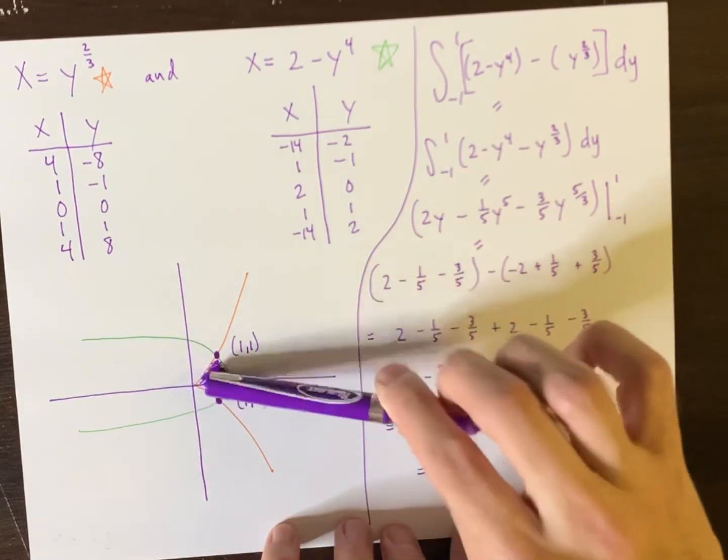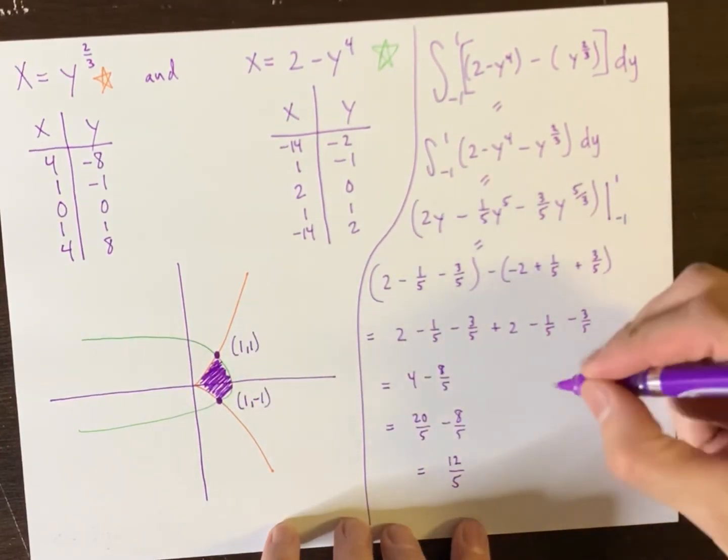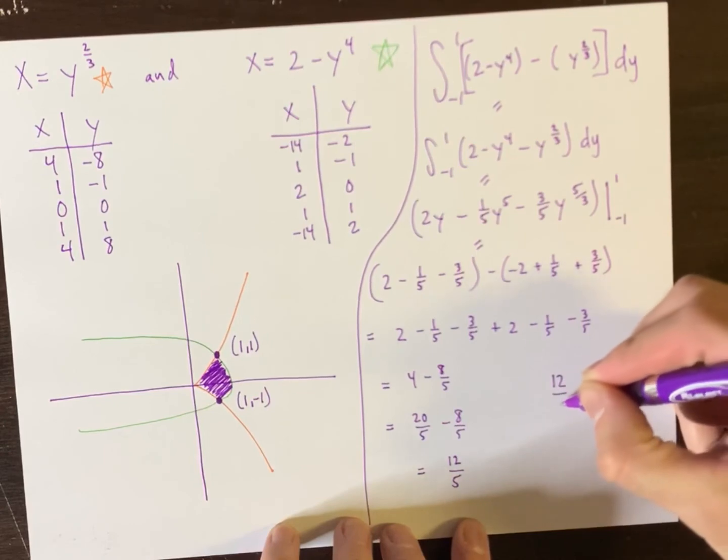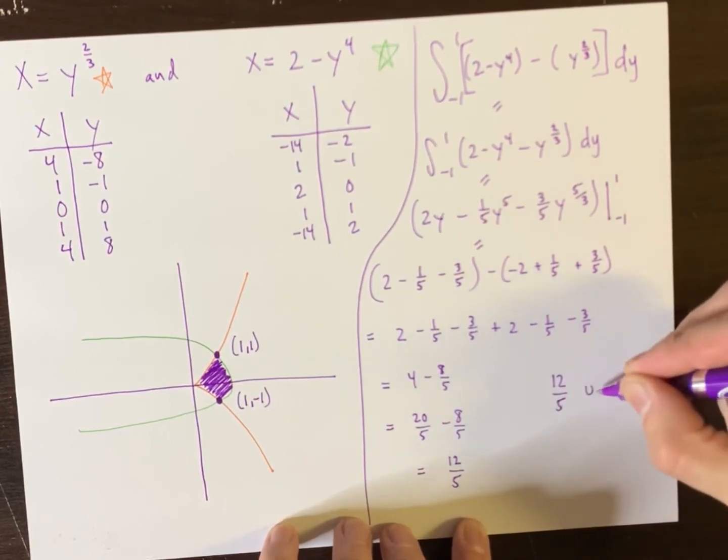And so the area between these curves, that bounded region, has an area of 12 fifths square units.